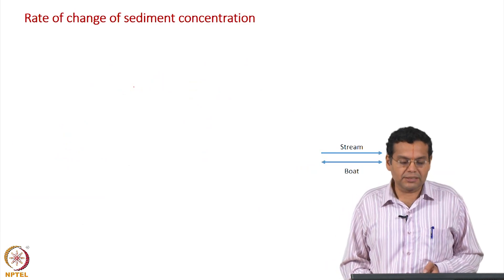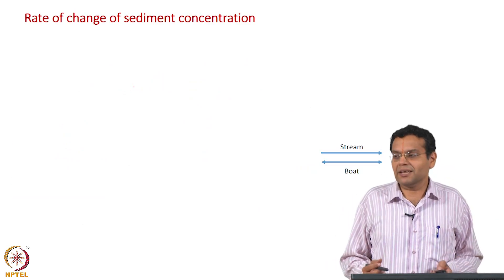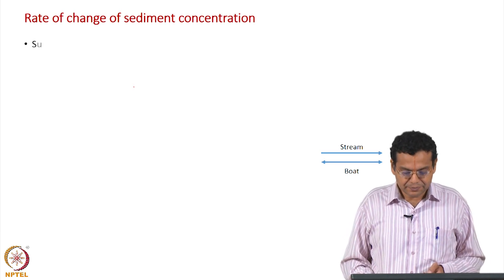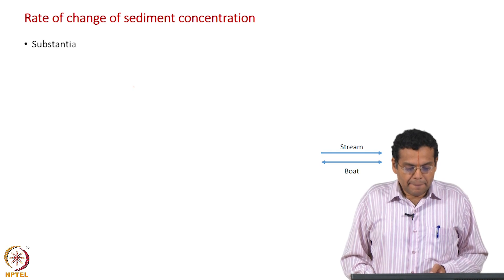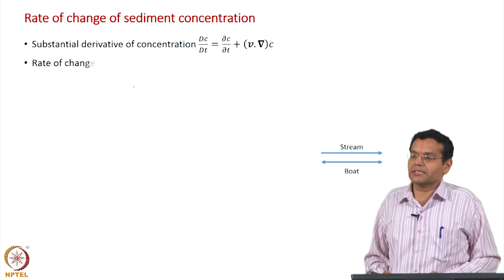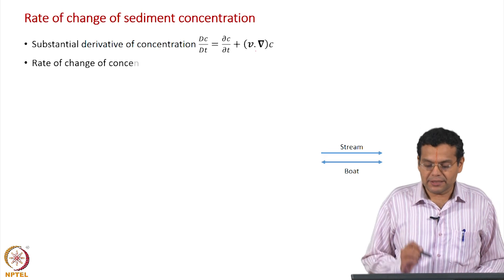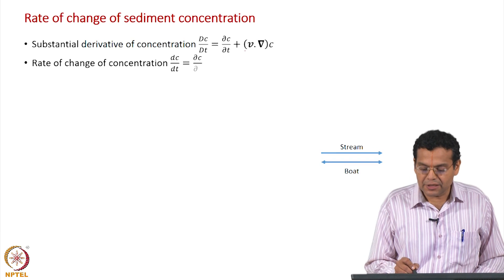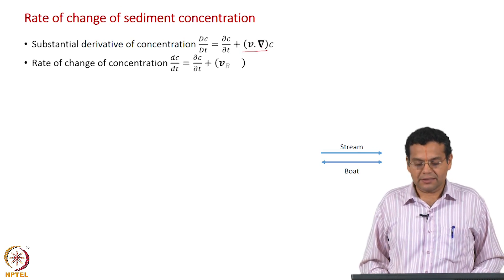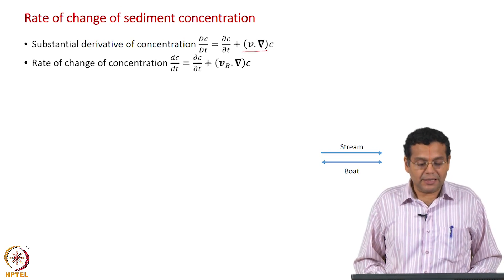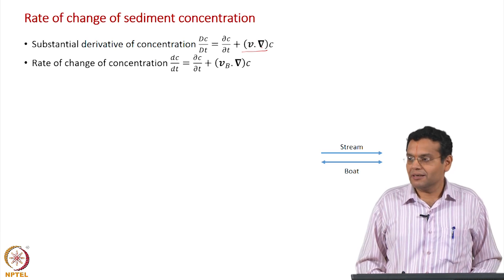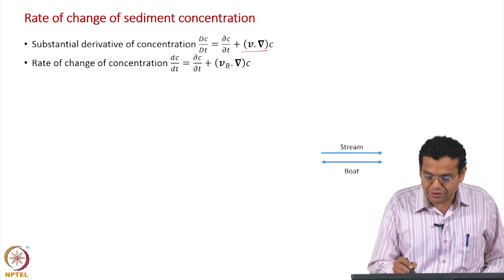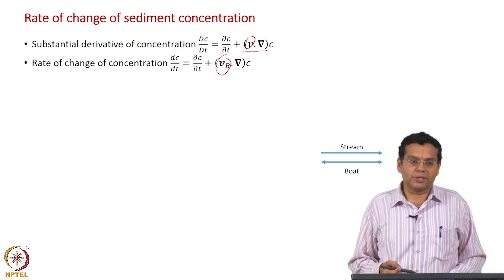Let us return back to the example — instead of fish we have sediment, and we will use the appropriate velocities. The substantial derivative of concentration is given by the expression using vectorial notation. In this particular case, it is some rate of change of concentration not following the fluid motion, so the velocity v becomes v_b, where b represents the boat.